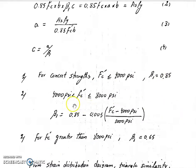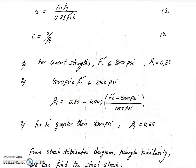If fc prime is between 4000 psi and 8000 psi, we use this equation to find our beta 1. For fc prime greater than 8000 psi, beta 1 is equal to 0.65.